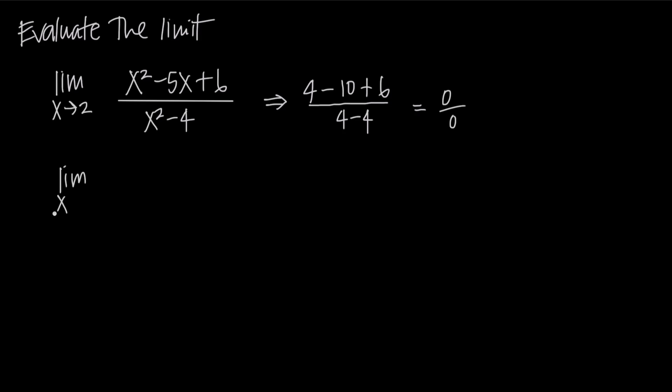We're going to rewrite this limit as the limit as x approaches 2. And then in the numerator here, we're going to set up our factors like this, and what we want to say is minus 3 and minus 2. That way we'll end up with x squared minus 2x and a minus 3x, which will give us a minus 5x, and then a negative 3 times a negative 2, which will give us a positive 6.